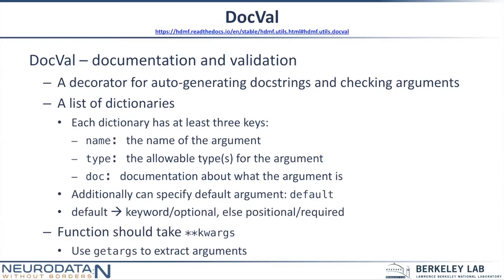Docval is a decorator for auto-generating docstrings and checking arguments. It takes in a list of dictionaries that describe each argument to a function: name, type, and doc — where name is the name of the argument, type defines what type it is, and doc is the documentation string. Additionally, you can specify a default argument — if you include a default, it will create a keyword argument. Functions that use docval always need to take **kwargs as the arguments.